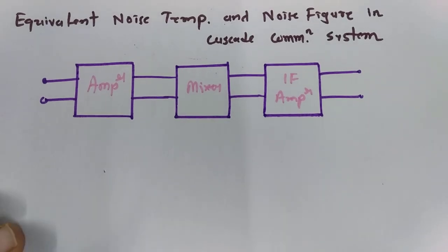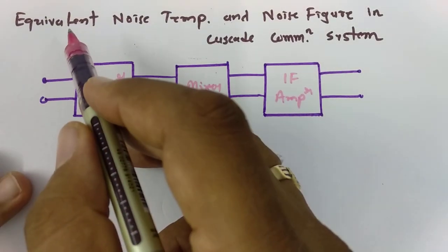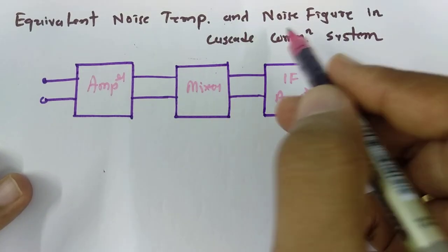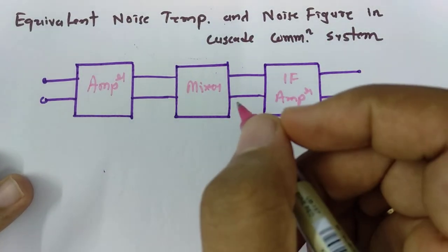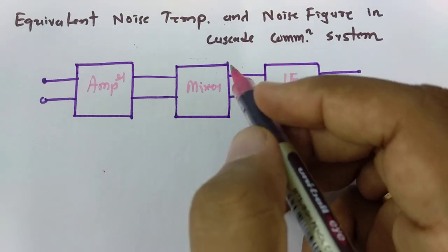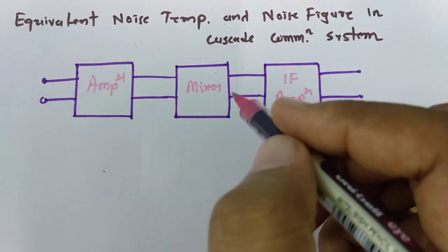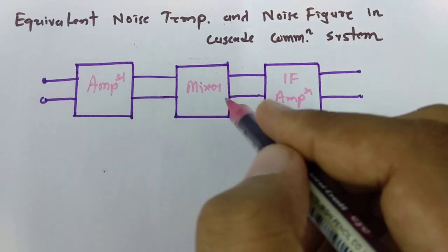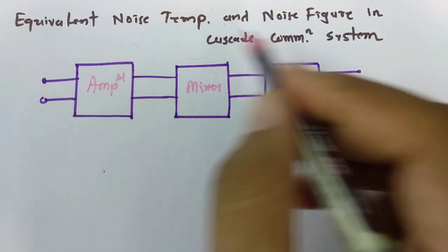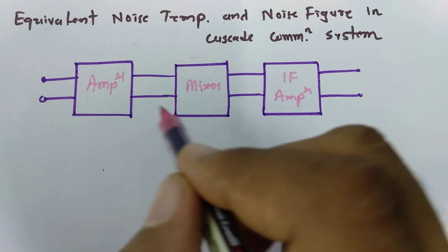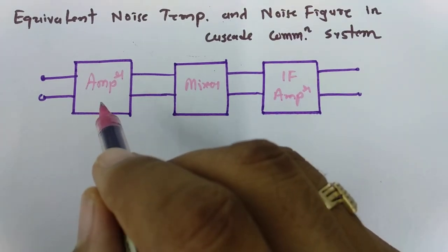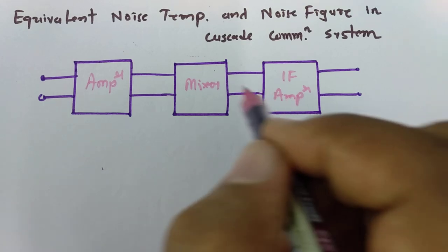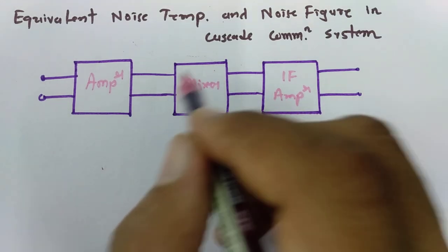Welcome to the communication engineering playlist. In this session, I'll explain how to calculate equivalent noise temperature and noise figure in a cascaded communication system. I'll also explain the common mistakes that students make when calculating equivalent noise temperature and noise figure, so that it will be clear to you and you will not make mistakes after watching this video.